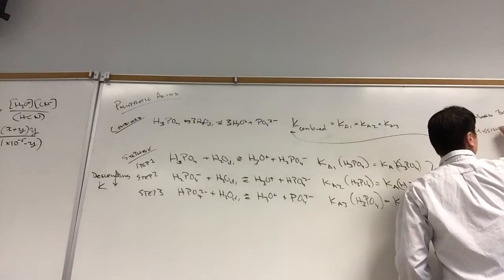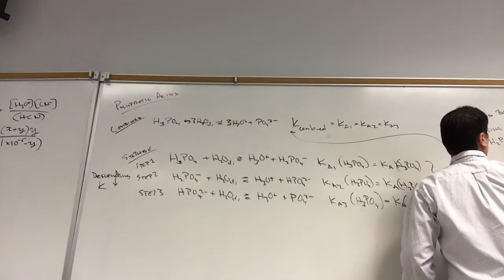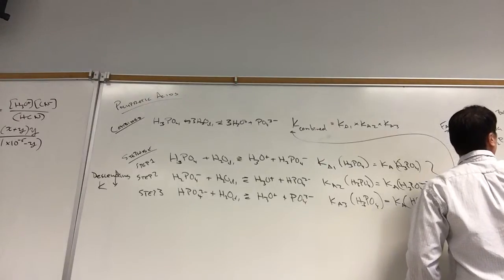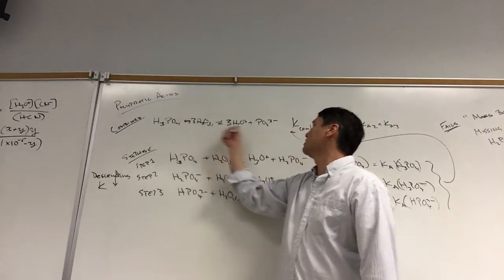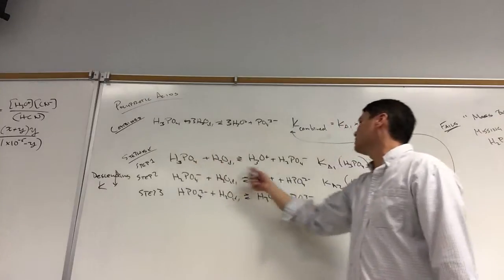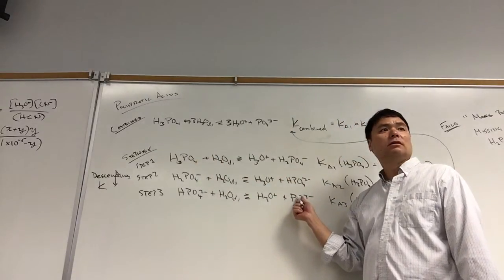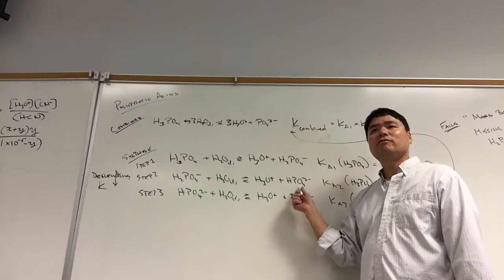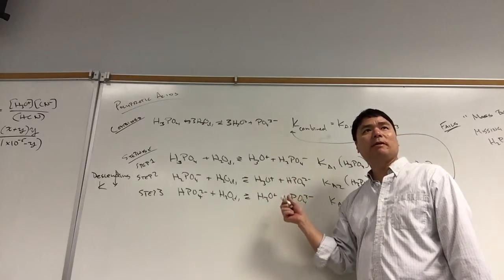What we're saying is that all phosphorus here ends up as phosphate here. No, it doesn't. All phosphorus here ends up in three different species here. And so all together there should be four phosphorus-containing species. So this is what we mean by fails mass balance.